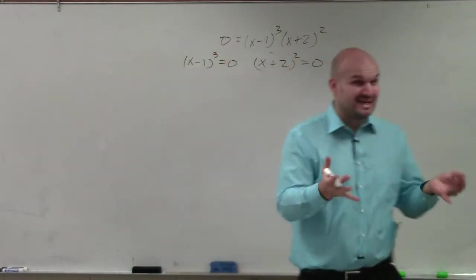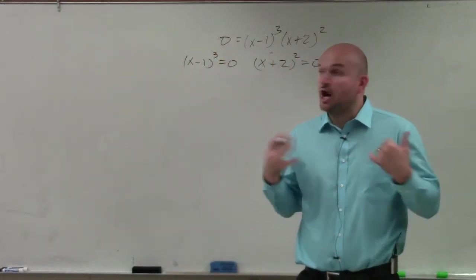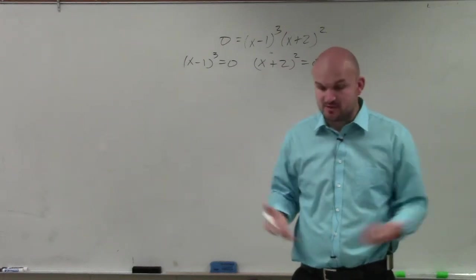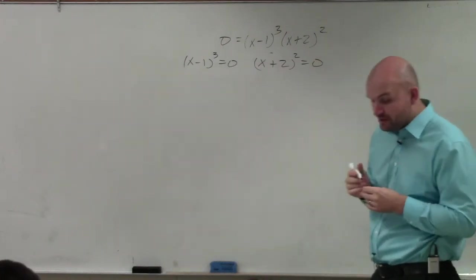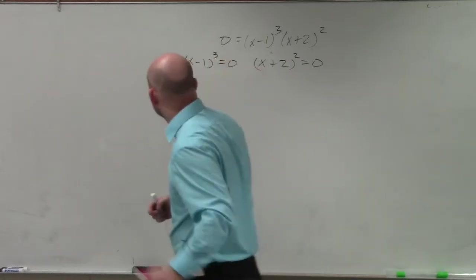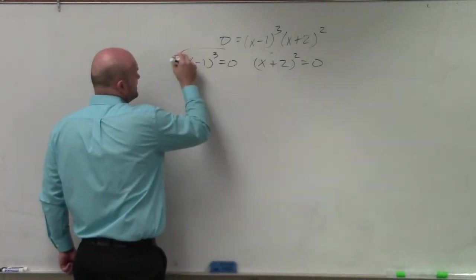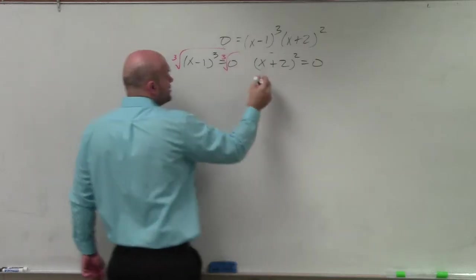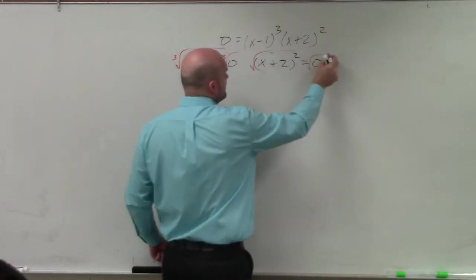However, before I can do anything inside the parentheses, I have to undo what's happening outside the parentheses, which looks like cubing and squaring. So I need to undo cubing by taking the cube root of both sides, and undo the square by taking the square root of both sides.